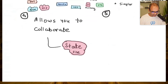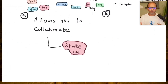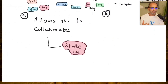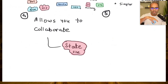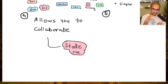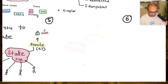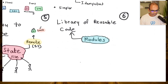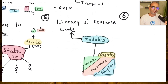Terraform also streamlines collaboration. When multiple people manage infrastructure, you don't want them overstepping each other's work. Terraform handles this through a state file, typically stored remotely, that everyone accesses. If someone is provisioning something, it locks that state so nobody else can make a change simultaneously. This is remote state management, which streamlines the collaboration process.